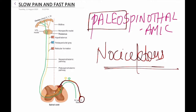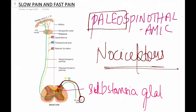These first-order neurons synapse with the second-order neuron in the dorsal grey horn. The second-order neuron begins at the substantia gelatinosa cells. These fibers then cross to the opposite side and occupy the lateral white funiculus.